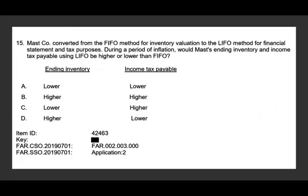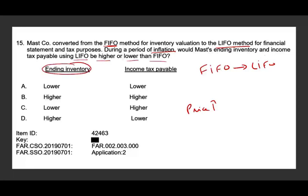This company converted from the FIFO method for inventory valuation to LIFO for financial statement and tax purposes during a period of inflation — meaning prices are rising. What would happen to ending inventory and income taxes payable using LIFO versus FIFO?